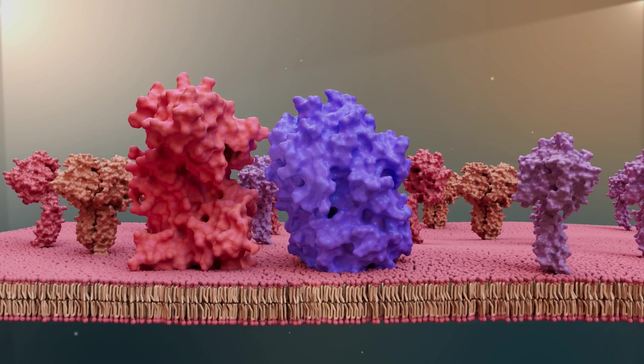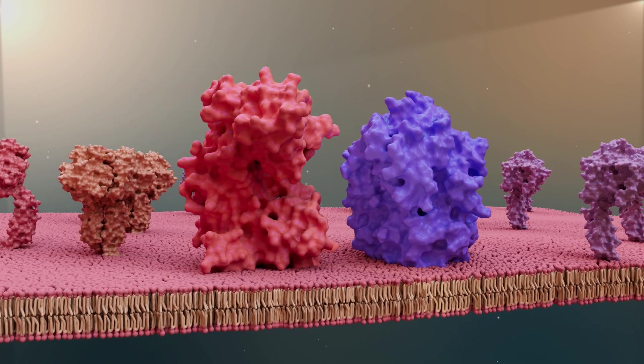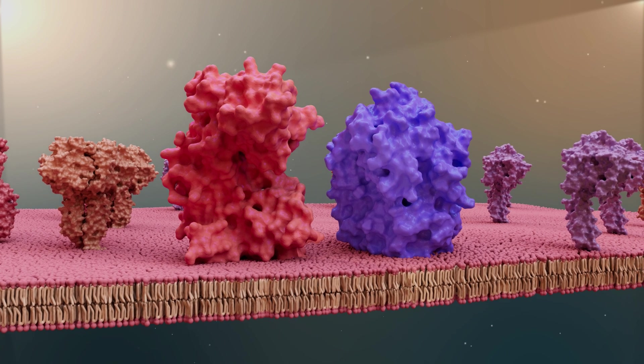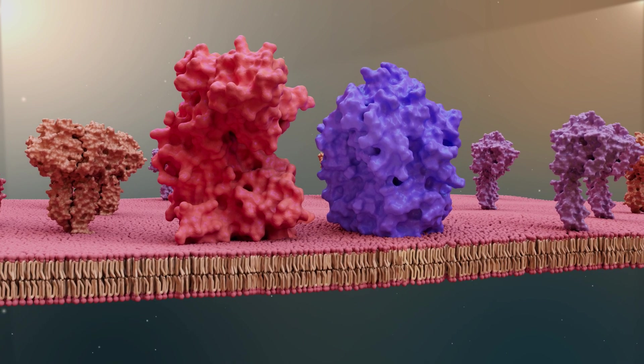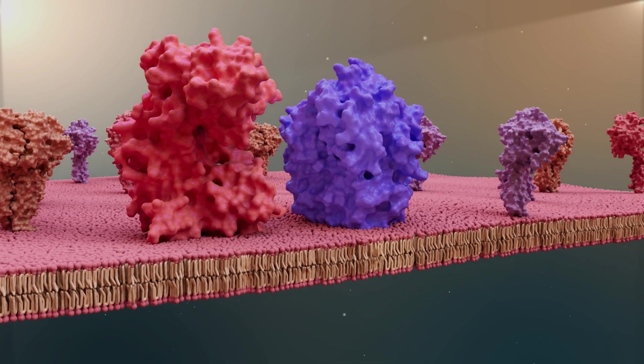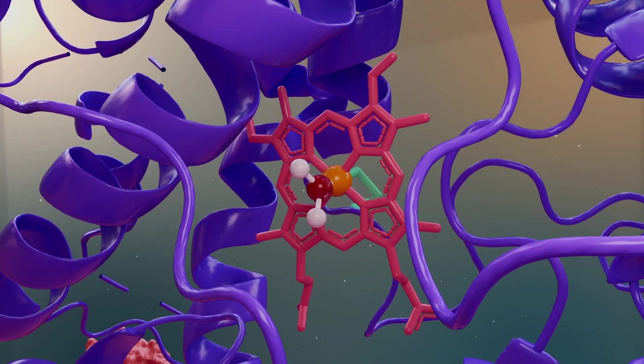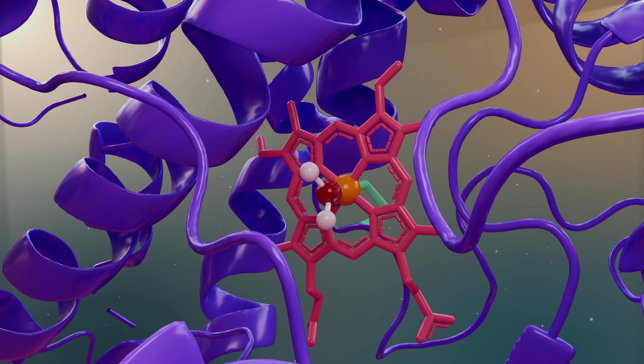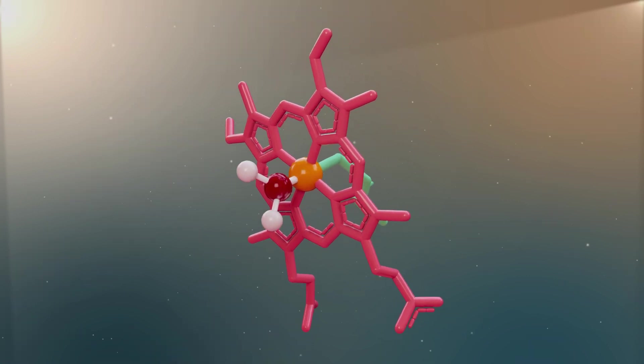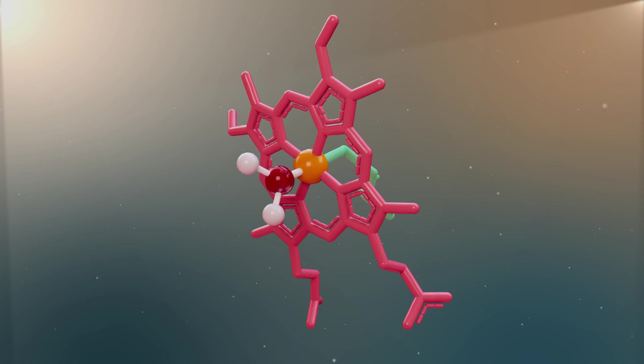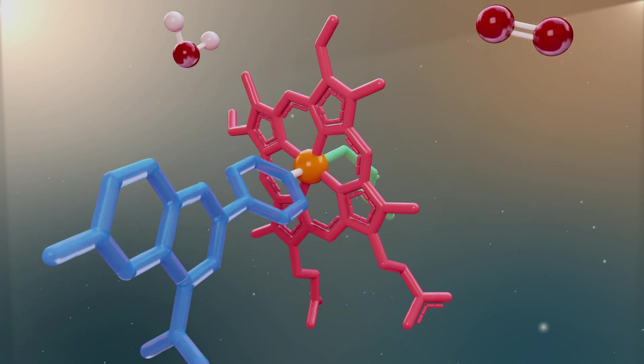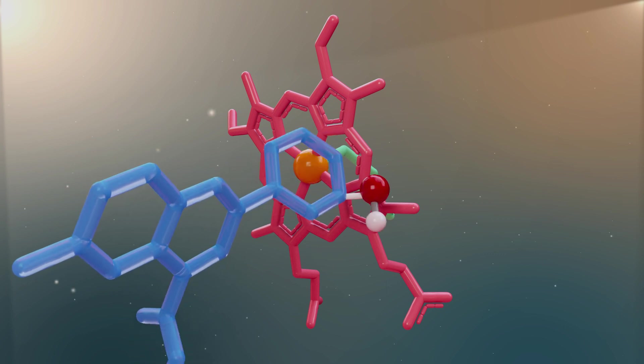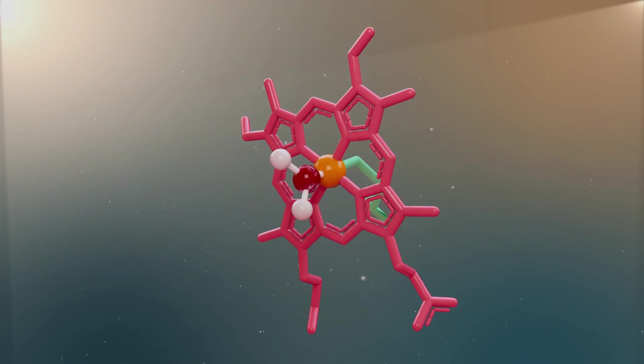CYP450 enzymes achieve this by acting as monooxygenases, adding an oxygen atom to their hydrophobic substrate. The CYPs are able to do this with the help of their heme group. Electrons received from the cofactor NADPH and a redox partner assist in the oxidation of the iron atom. When a substrate is near to the oxidized iron, the oxygen will be transferred to the hydrophobic substrate, creating a more polar product. This is Phase 1 metabolism.